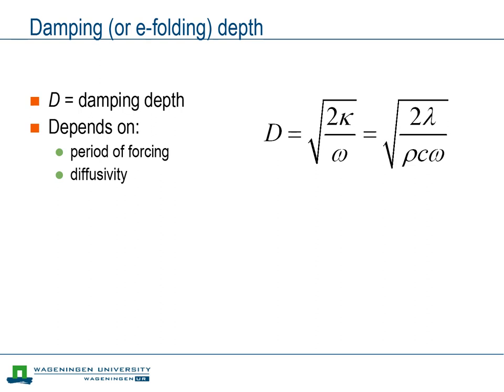The damping depth is in fact a combination of a number of parameters that occurred in the original diffusion equation and in its imposed boundary condition. The frequency ω stems from the forcing at the surface, whereas the diffusivity stems from the diffusion equation itself.